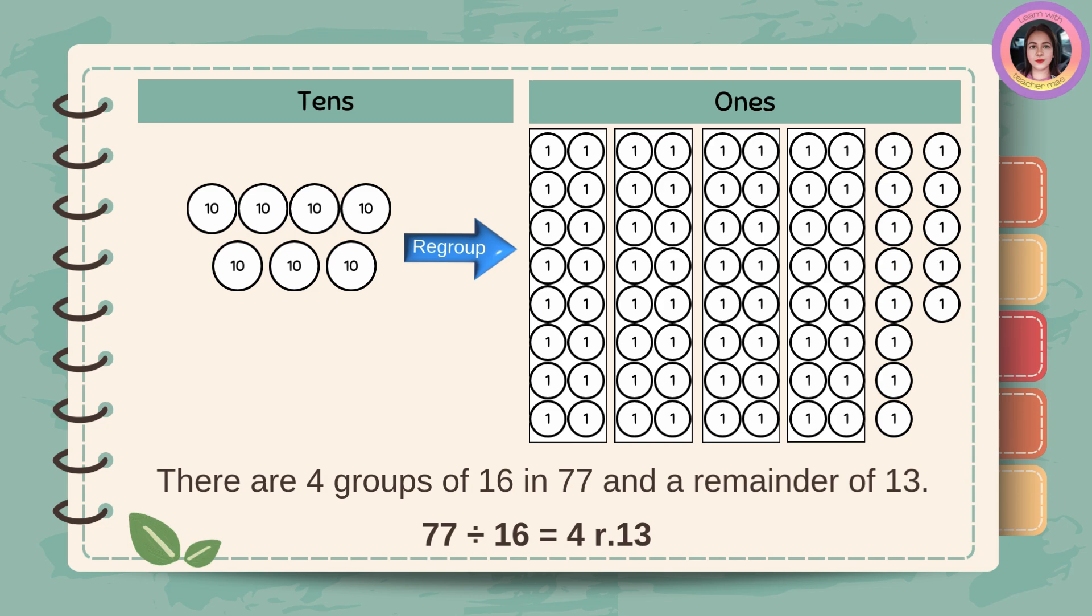There are 4 groups of 16 in 77 and the remainder of 13. Therefore, 77 divided by 16 is equal to 4 remainder 13.